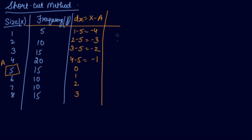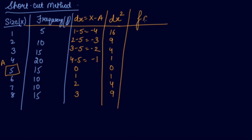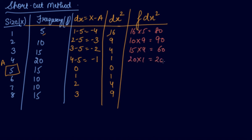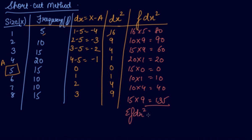Next, square these dx values to get dx²: 16, 9, 4, 1, 0, 1, 4, 9. Then multiply dx² by frequency to get fdx²: 16×5=80, 10×9=90, 15×4=60, 20×1=20, 15×0=0, 10×1=10, 10×4=40 (frequency 10 into 4), 15×9=135. The summation of fdx² equals 395.